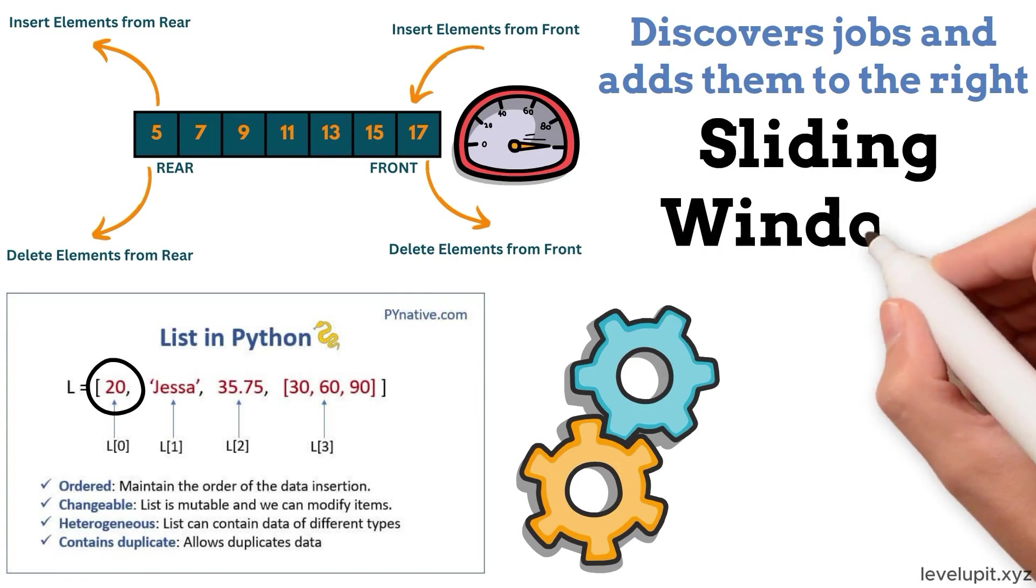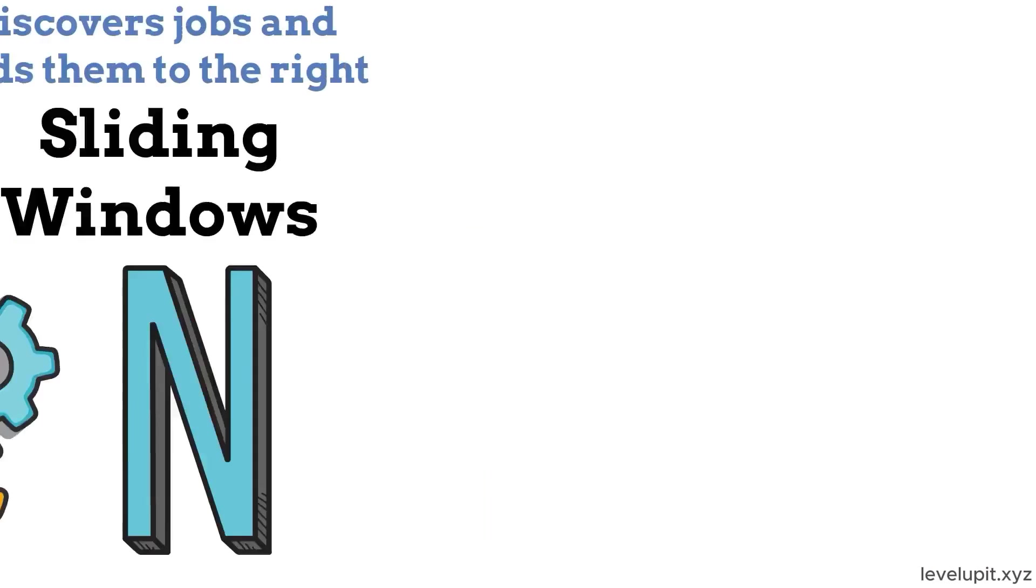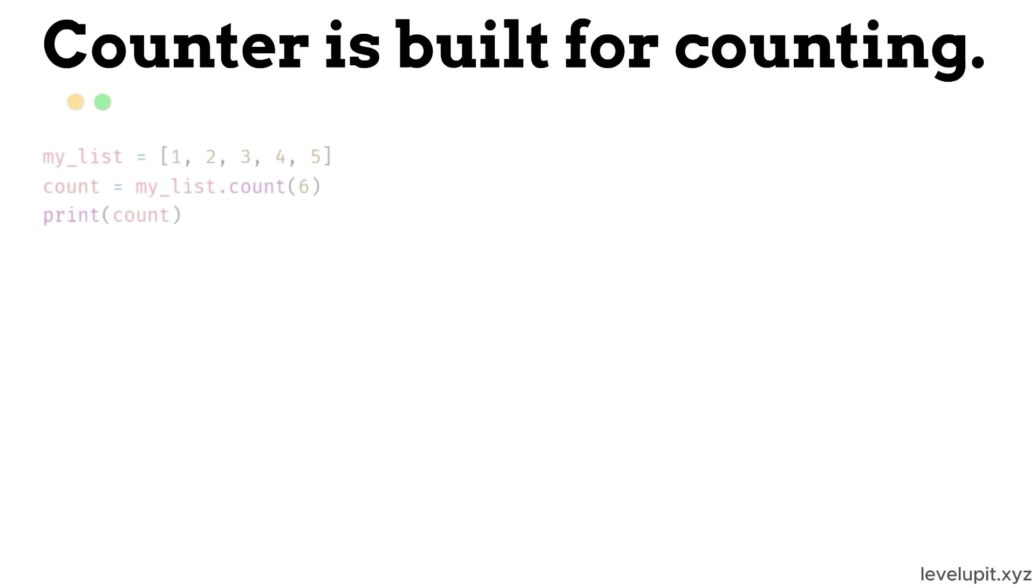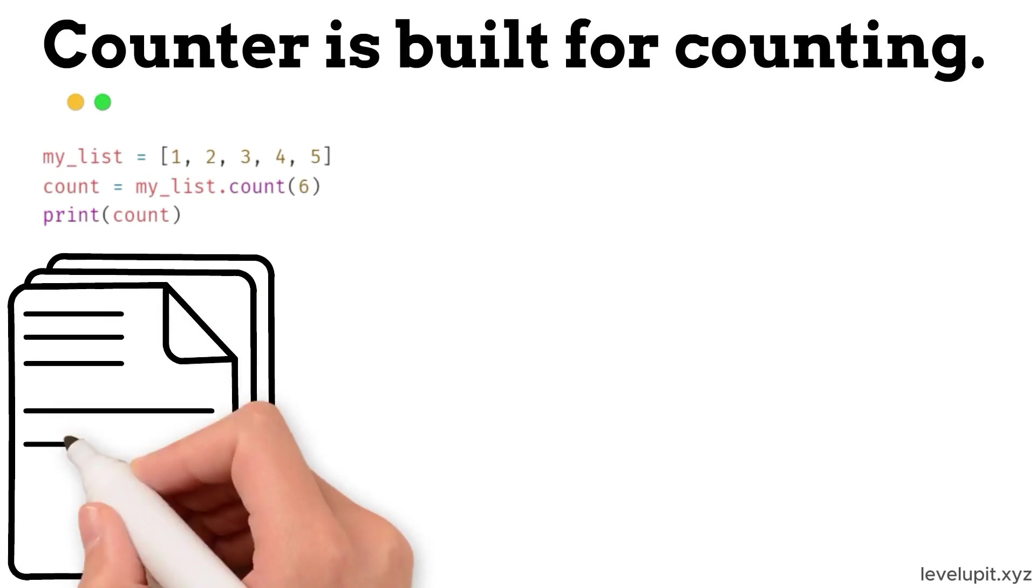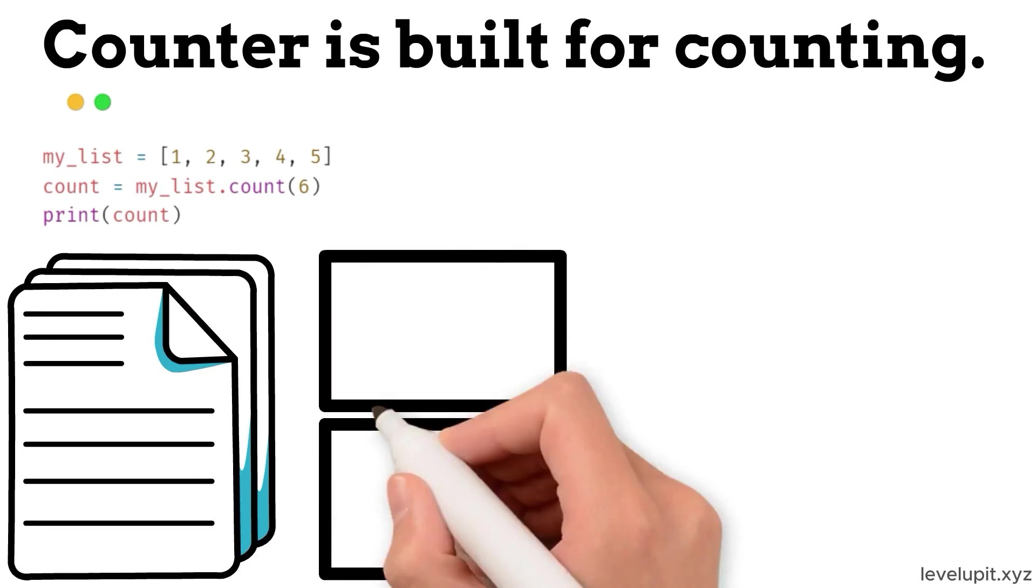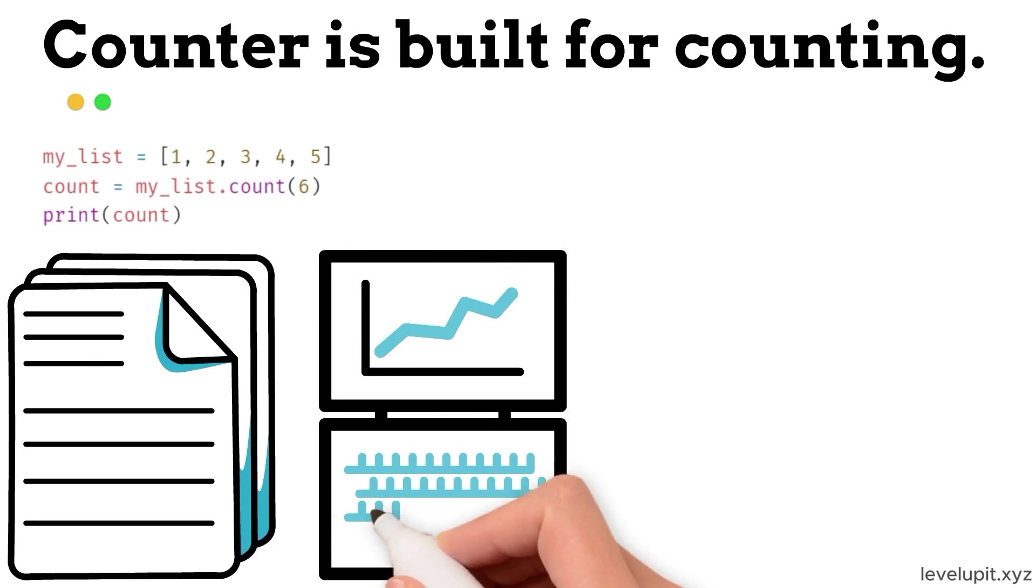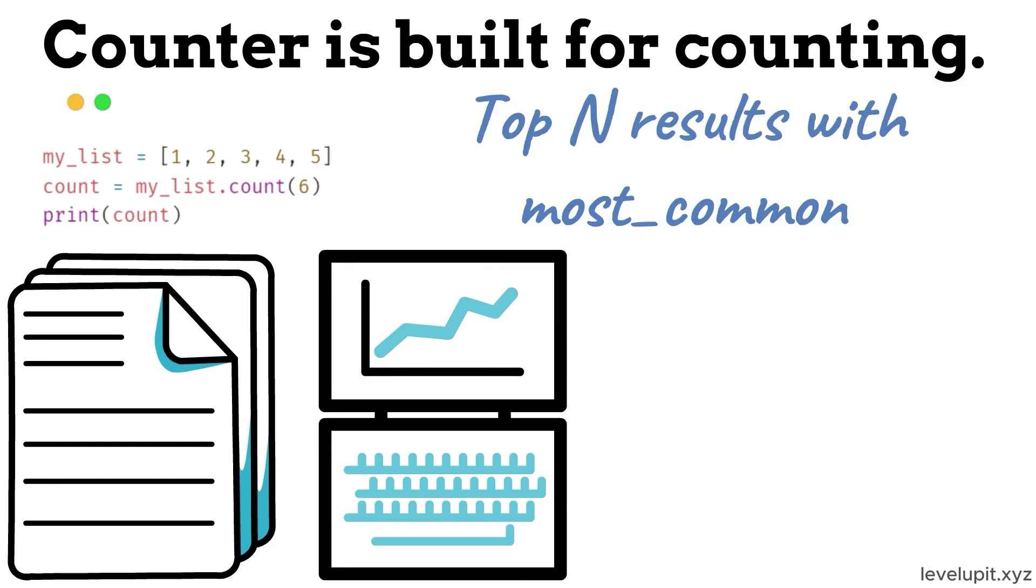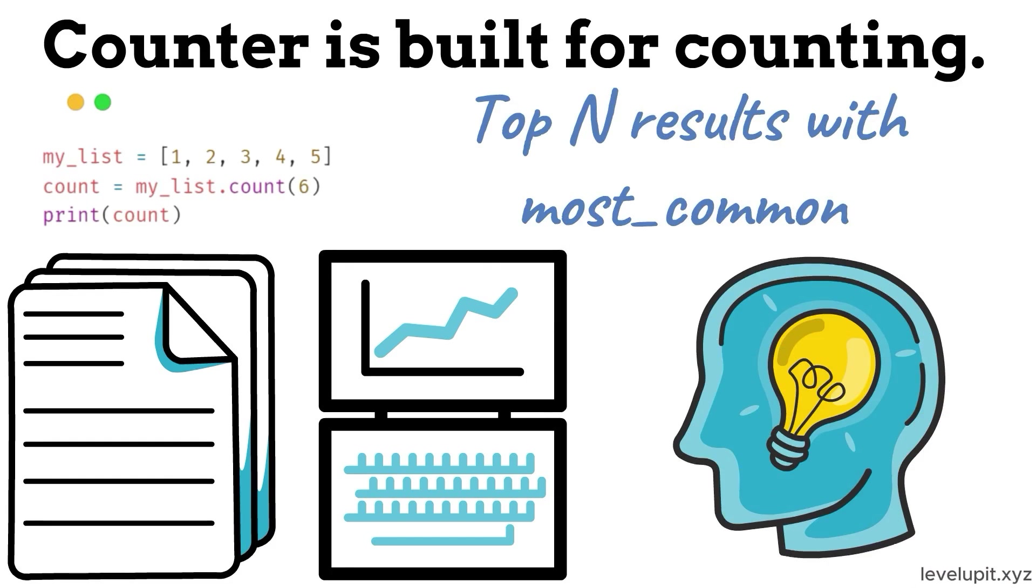Counter is built for counting. Give it a list of items and it tells how many times each item appears. If you have a transcript and want the most common words, Counter does it easily. If you have event logs and want the most frequent status codes, Counter reveals them right away. It can also show the top-end results with most_common, which turns raw lists into quick insights without writing loops and conditionals by hand.